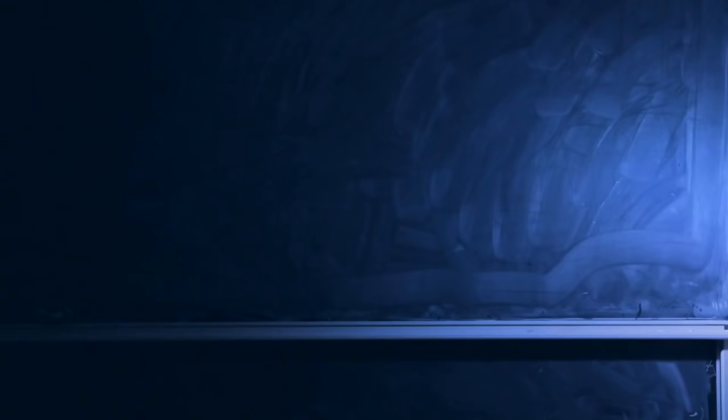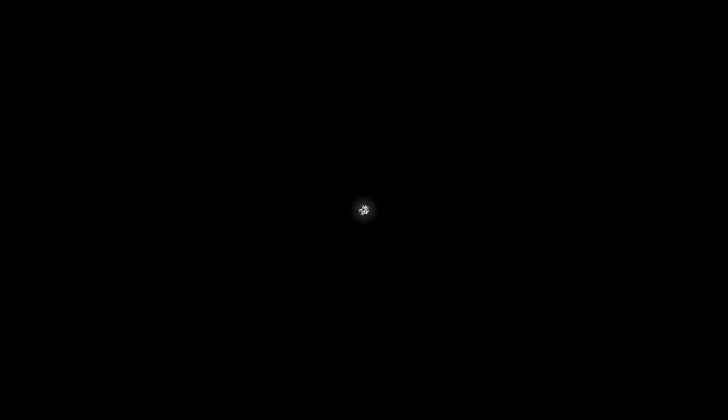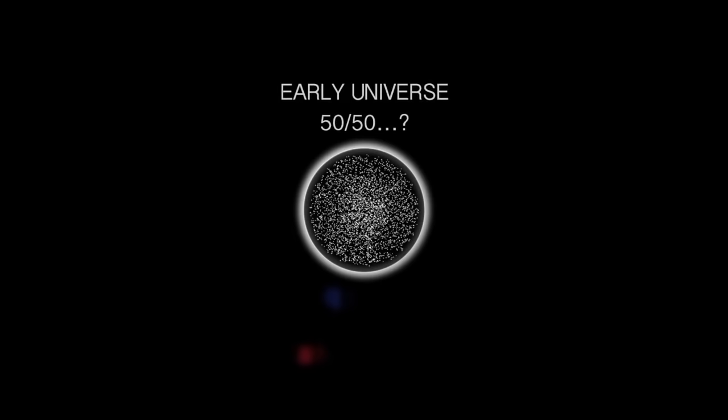Why are we here? We know that the Universe is made of matter and not of antimatter. We also know that the early Universe should have been made up of equal parts matter and antimatter. But where did all the antimatter go?